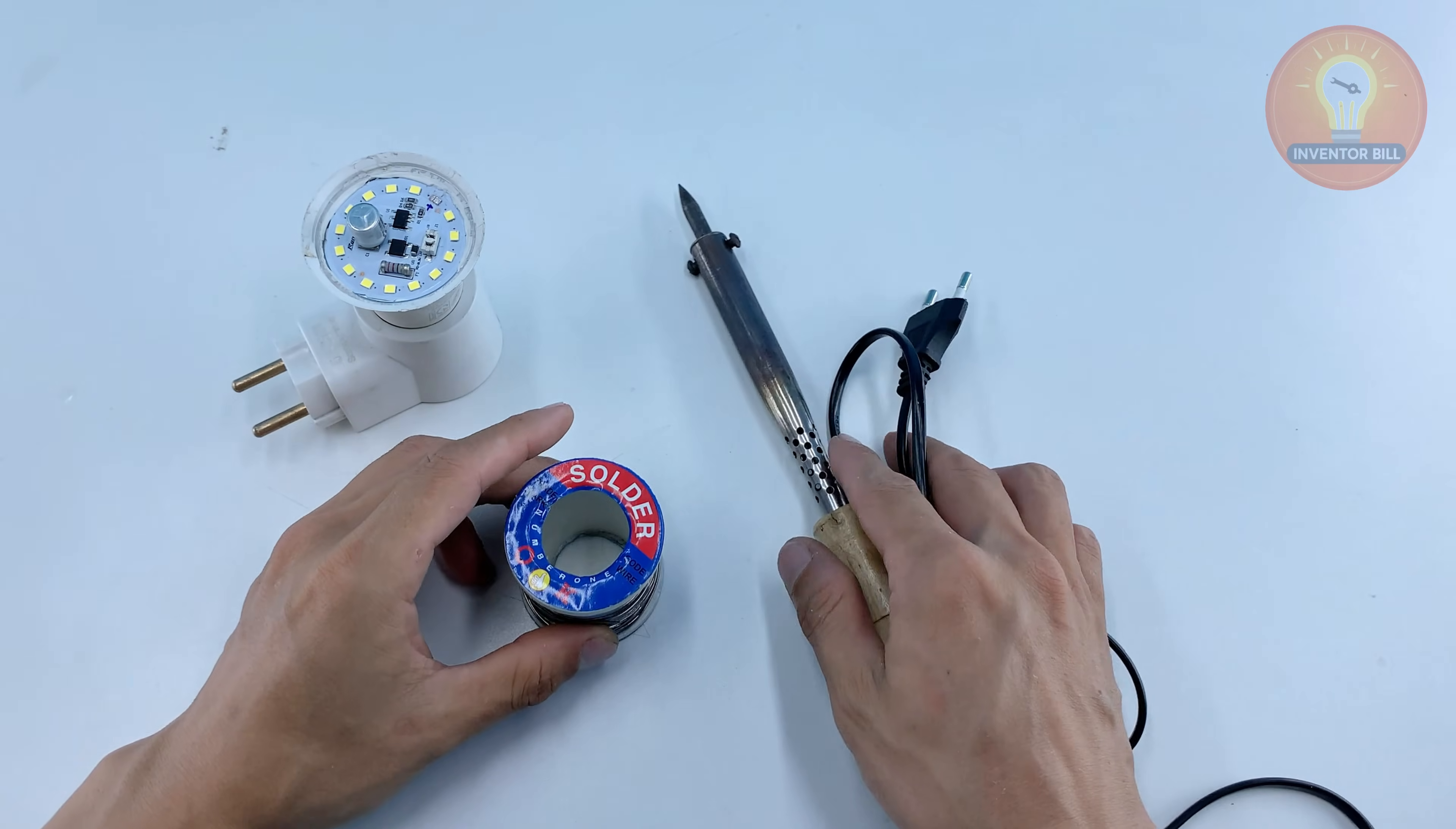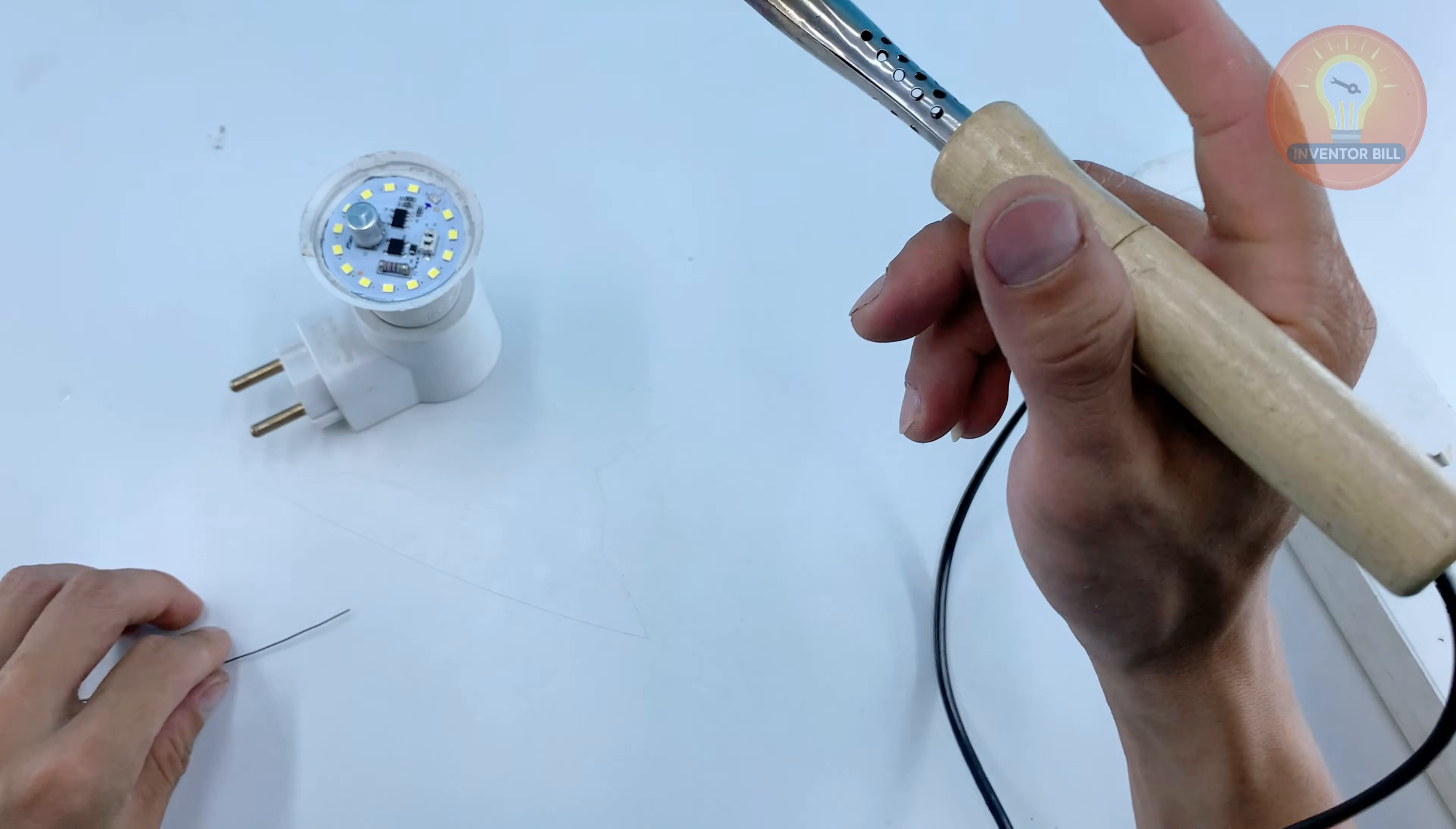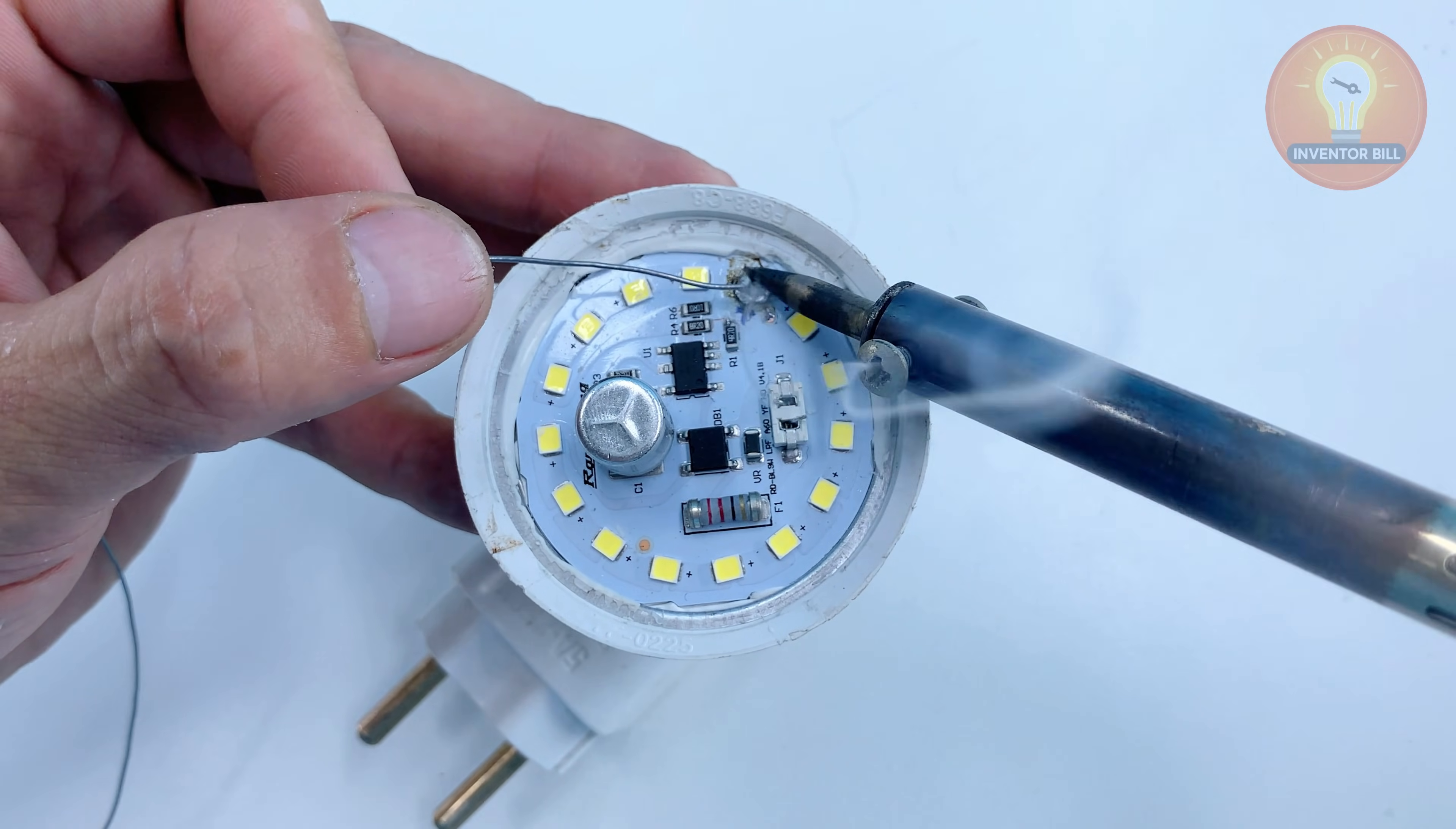Once the pad is clean, heat up your soldering iron and place a small drop of solder right where the LED used to sit. Let the solder flow until it bonds to the copper trace under it. Give it a few seconds to cool down so the board stays flat.